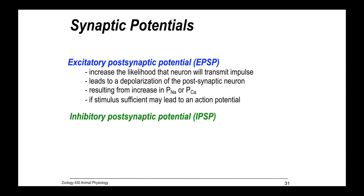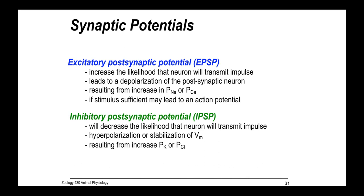Opposite to that is the inhibitory postsynaptic potential. It will decrease the likelihood that the neuron will transmit impulse. It causes hyperpolarization or stabilization of the membrane potential. It results from an increase in the permeability of potassium or chloride. It's greater than the normal excitatory stimulus required to trigger an action potential.